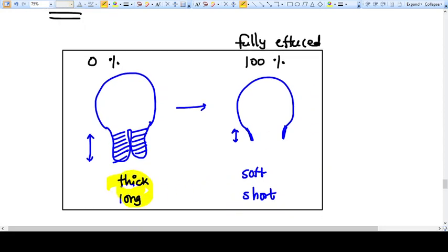If there is a thick long cervix, the percentage given is 0, and if we have a soft and short cervix, the percentage given is 100. So fully effaced cervix, that means 100% effacement, when the cervix becomes very soft, thinner like paper.